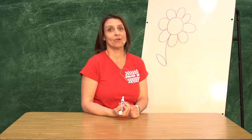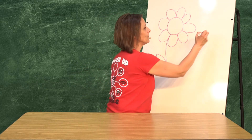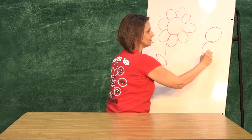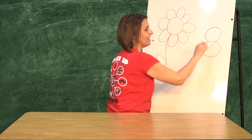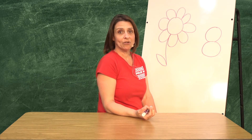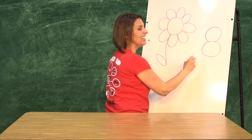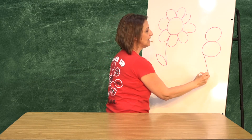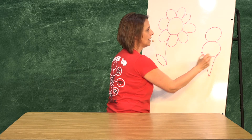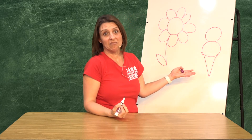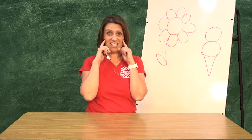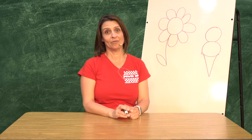Mi próximo dibujo. Voy a hacer un círculo, otro círculo. Yo pienso que a algunos de ustedes les gustaría comer esto en el verano cuando hace mucho calor. Y abajo le voy a poner un triángulo. ¿Pueden adivinar qué es? Debe ser un cono de nieve. A lo mejor les parece como un cono de nieve. Pero es mi imaginación, y yo estoy contenta con cómo salió mi cono de nieve.